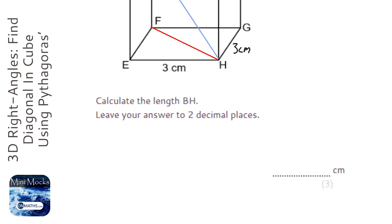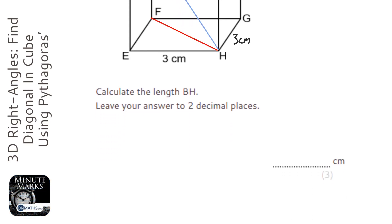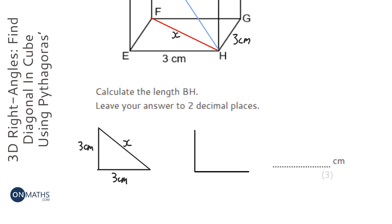Okay, so let's draw out those two triangles. So we've got triangle FEH first of all, and that will work out what this one is, which I'm going to call X. So that's 3 cm into cubes, they're all going to be 3 cm.